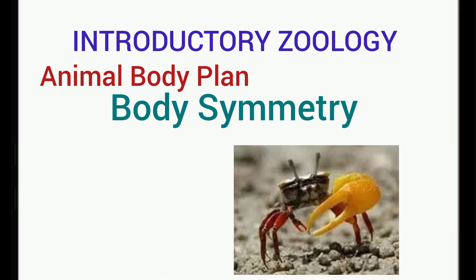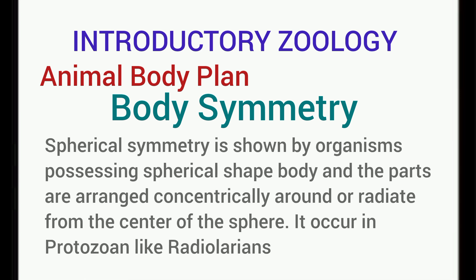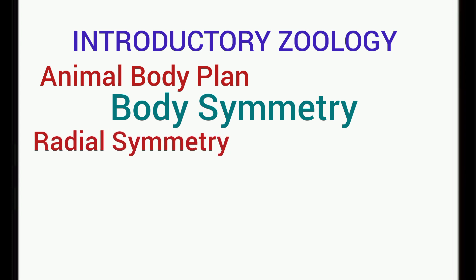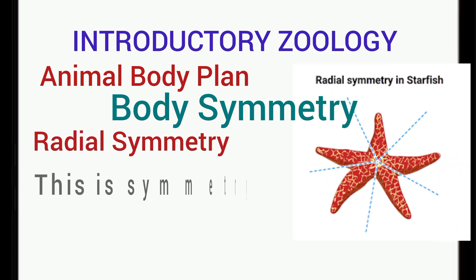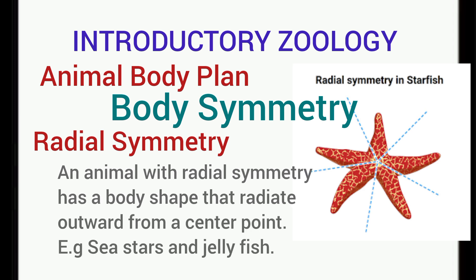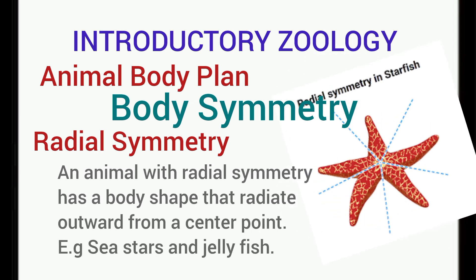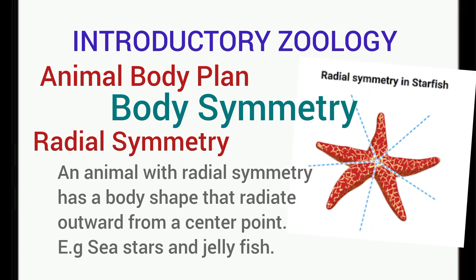Spherical symmetry, as the name implies, is found in organisms that are spherical in their body shape and their body radiates from the center of a sphere. An example of this is found in protozoa such as radiolaria. Radial symmetry is symmetry about an axis. Animals with radial symmetry have a body shape that radiates outward from a center point, such as starfish and jellyfish.